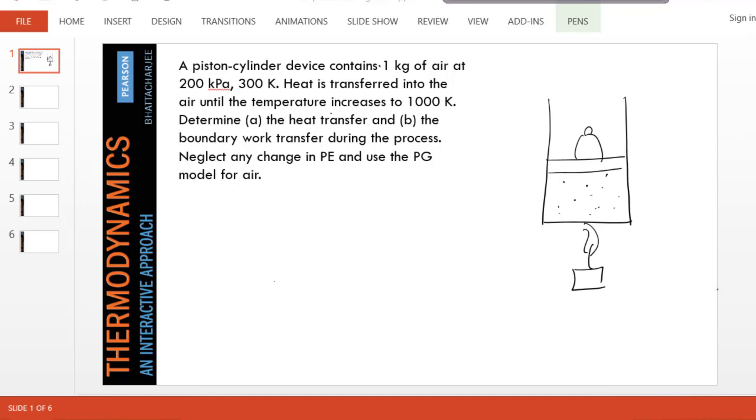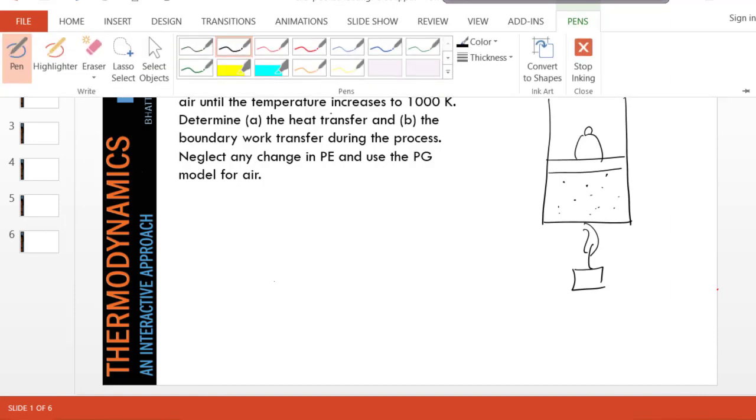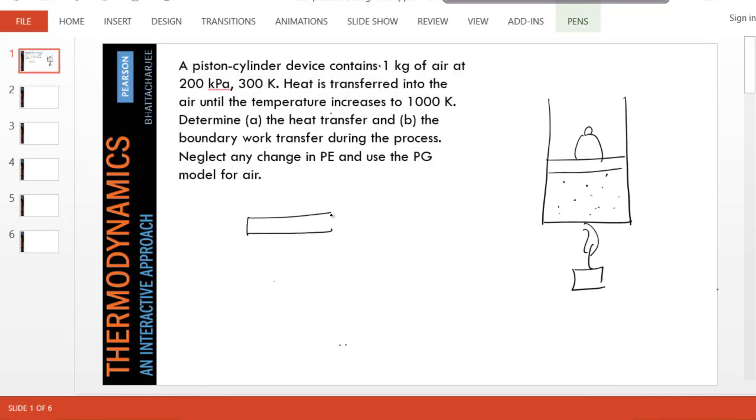Now the initial pressure is 200 kPa, but you can very well understand the pressure doesn't change because if you draw a free body diagram of the piston—we have done this in chapter zero—then we have a force of the weight on top and atmospheric pressure pushing it down and the gas from inside pushing it up.